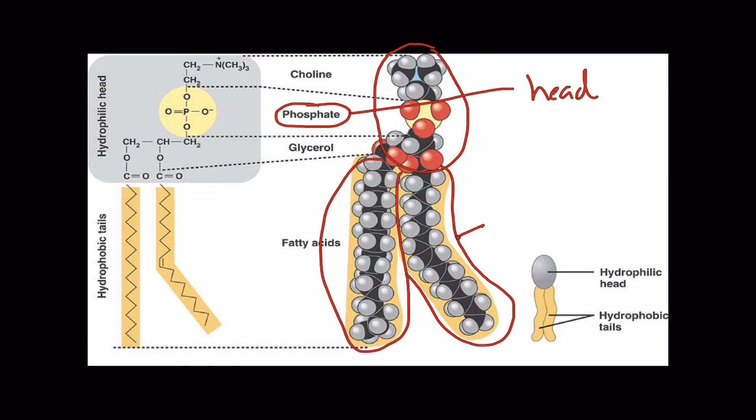This one's got a desaturation right here so it's got a little kink in it. This one looks like it's supposed to be completely saturated. So fatty acids attached to a head, and we call these the tails.